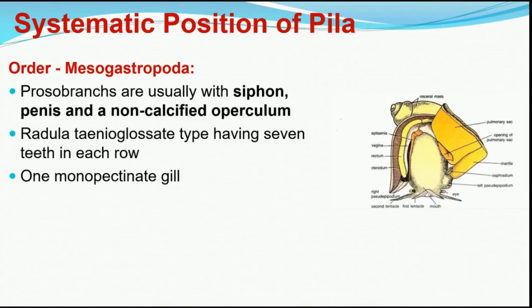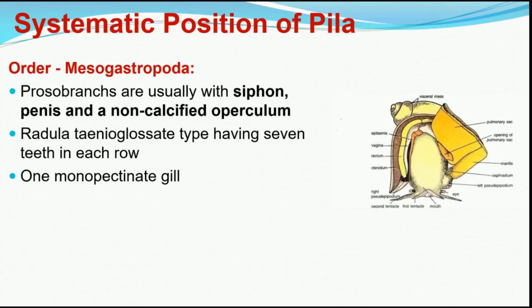They show the presence of one monopectinate gill. The ctenidium or gill is a respiratory organ found in mollusks. Some aquatic gastropods possess one ctenidium — they are called monopectinate — while some have two ctenidia, called bipectinate. In Pila, the gill is always monopectinate, meaning they have only one gill.